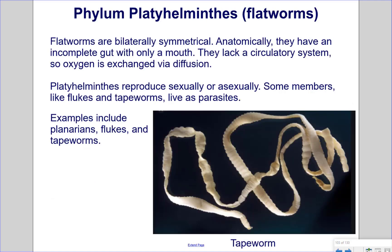Phylum Platyhelminthes — the flatworms. Flatworms are bilaterally symmetrical. Anatomically, they have an incomplete gut with only a mouth. They lack a circulatory system, so oxygen is exchanged via diffusion. Platyhelminthes reproduce sexually or asexually. Some members, like flukes and tapeworms, live as parasites. Examples include planarians, flukes, and tapeworms.